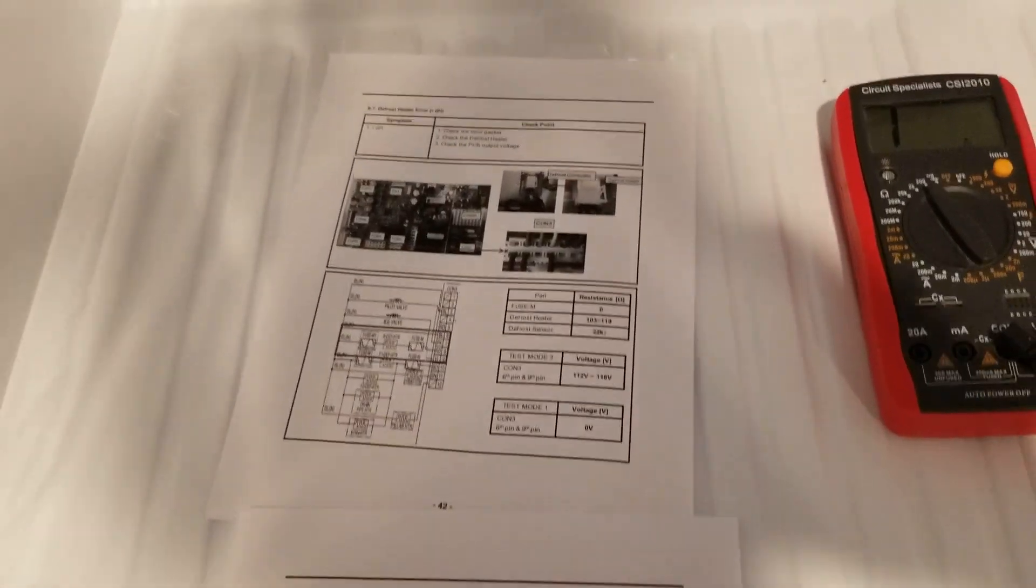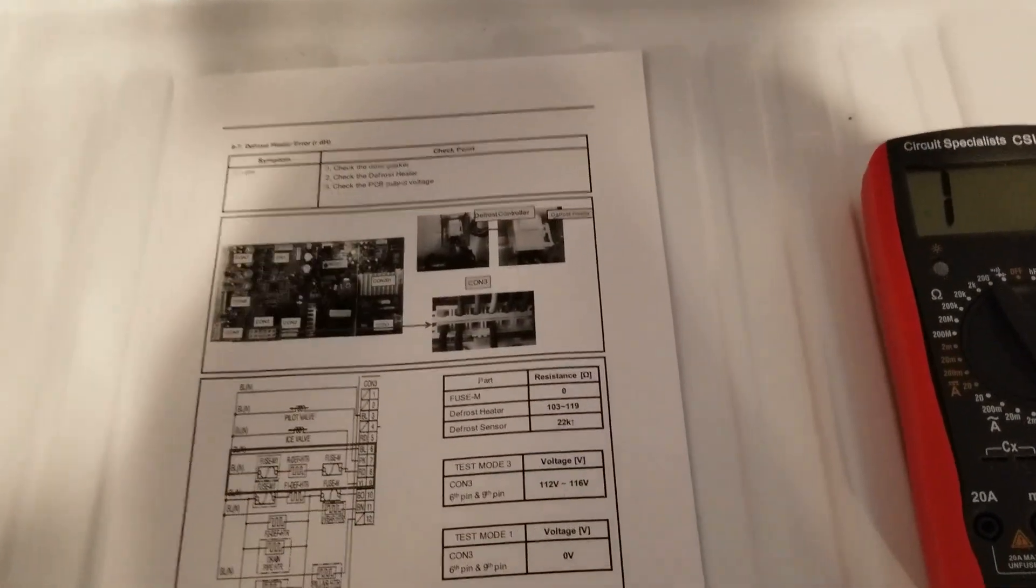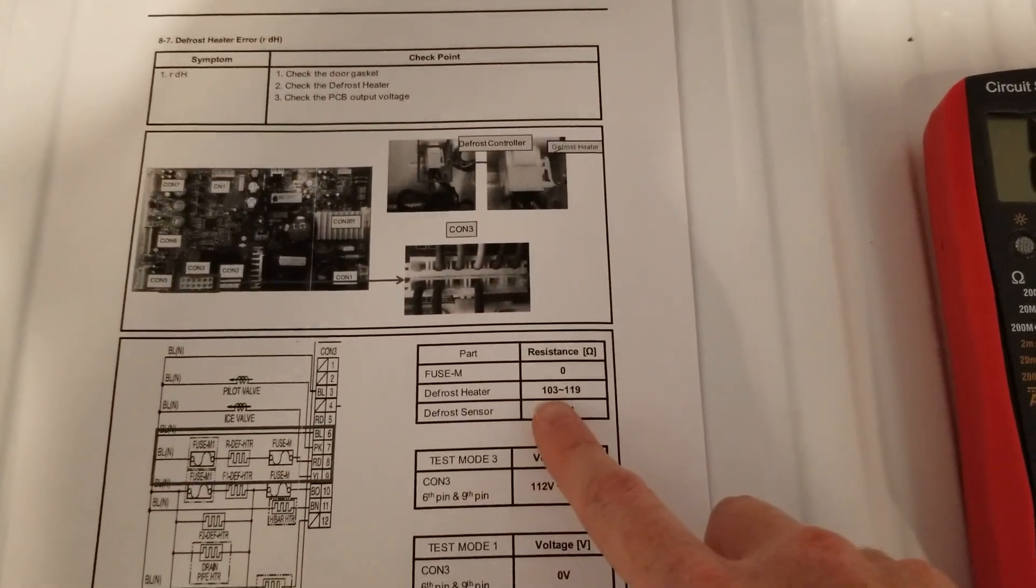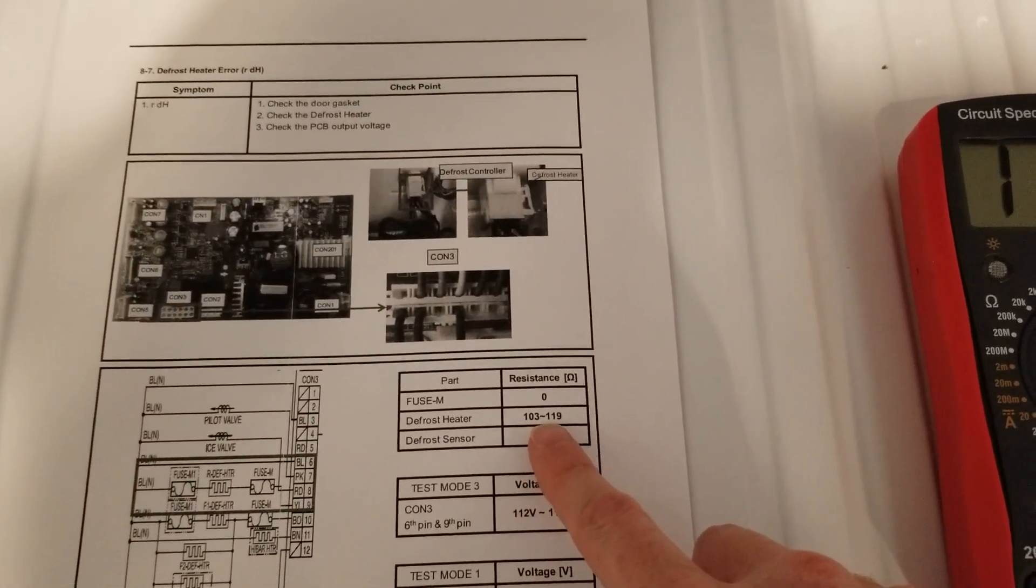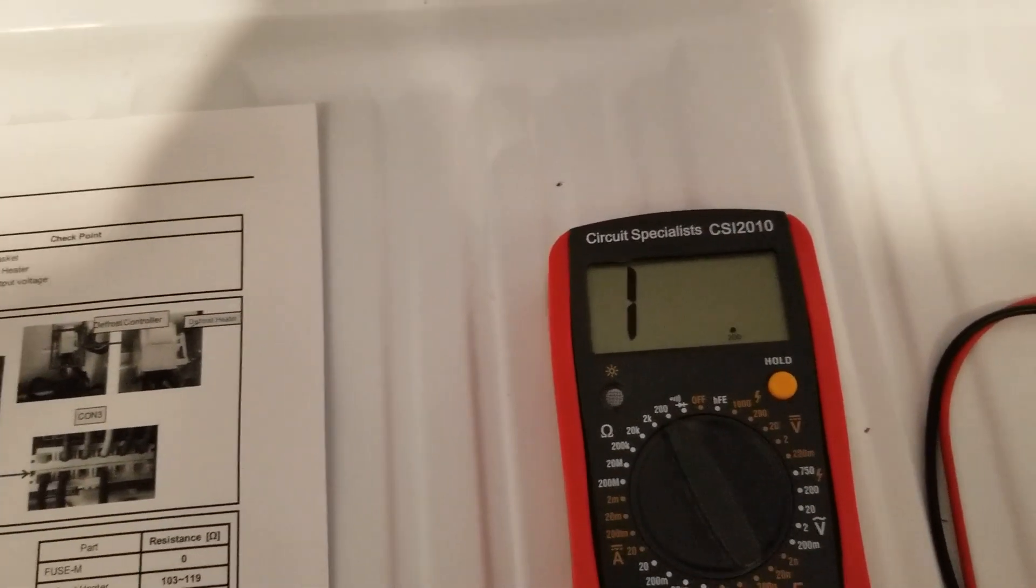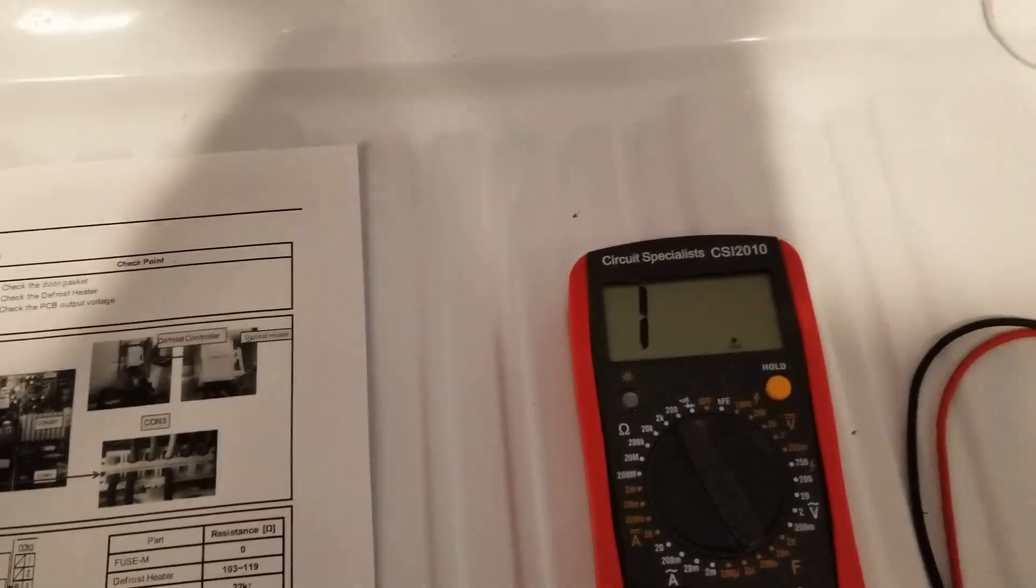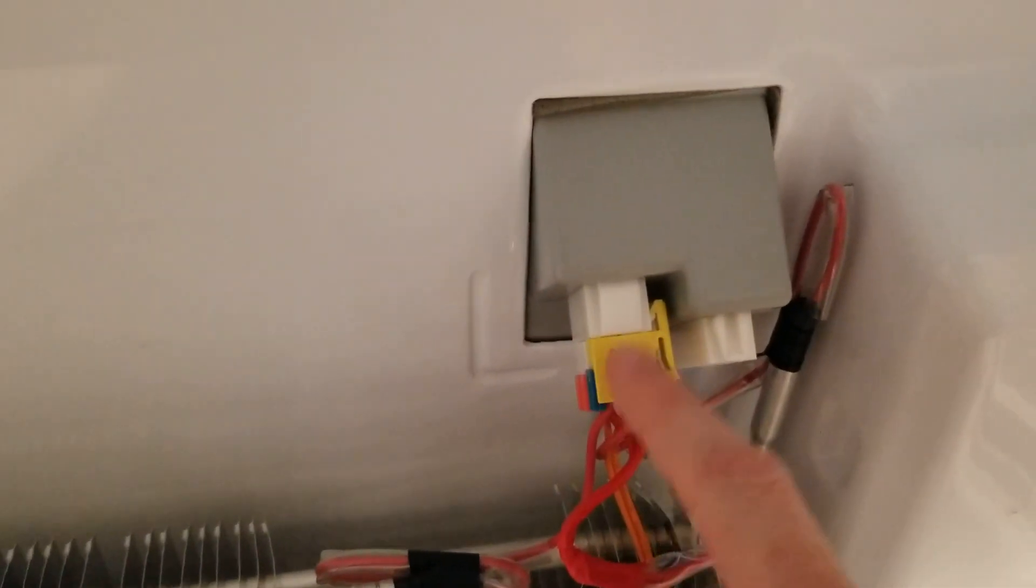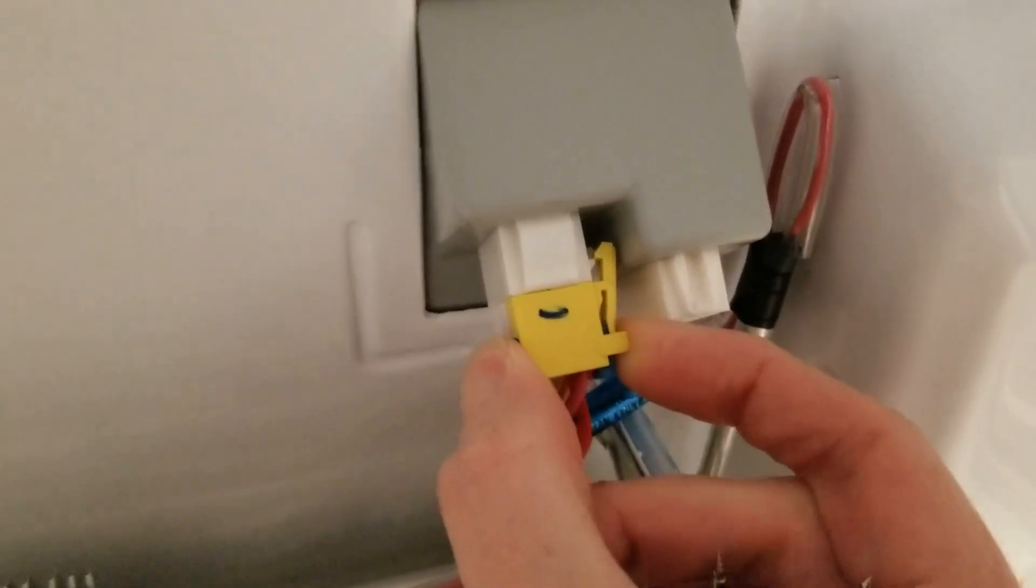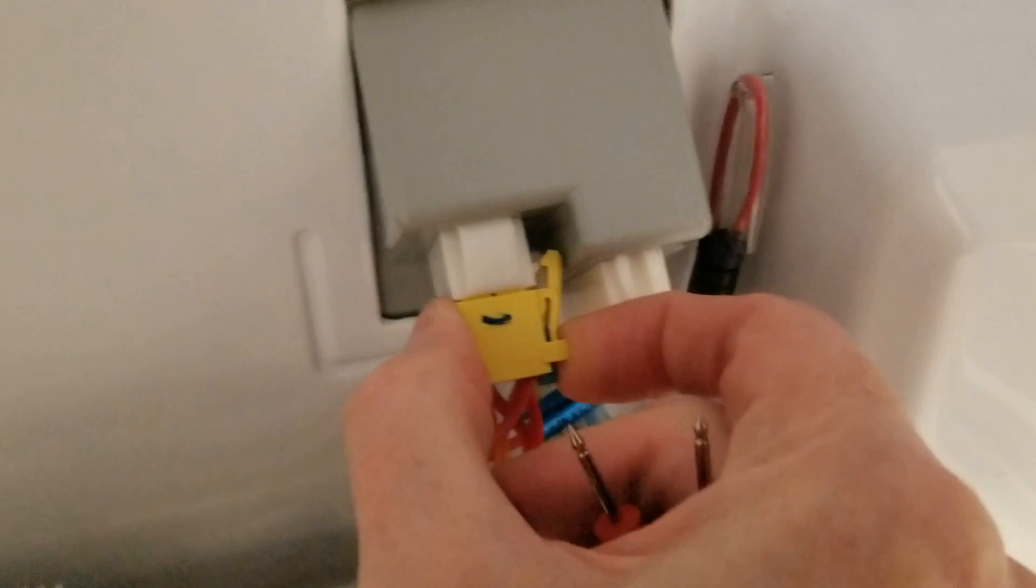First thing I'm gonna check is the defrost heater, which should be between 103 and 119 ohms. I have an ohm meter here set to 200 as its max value. The heater should be this first top yellow one. This is actually two pieces here.